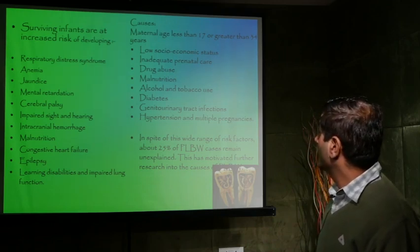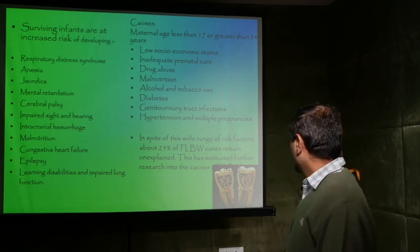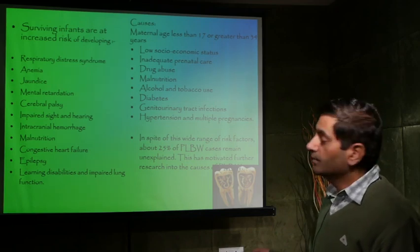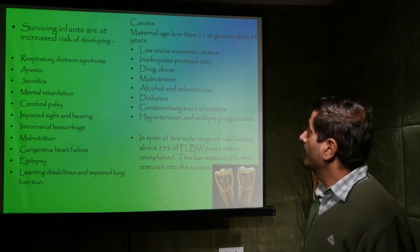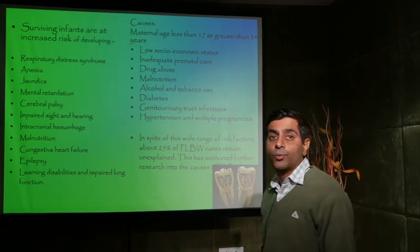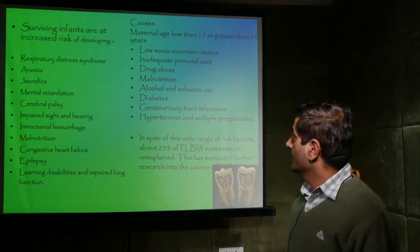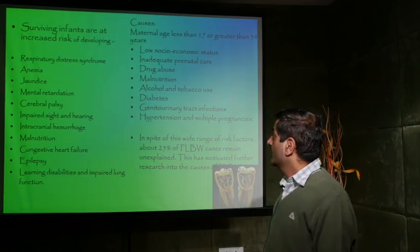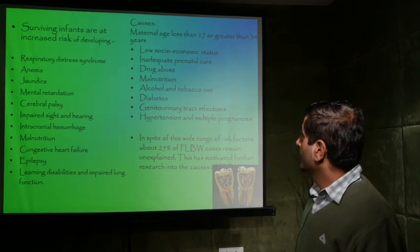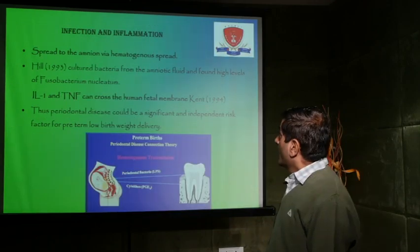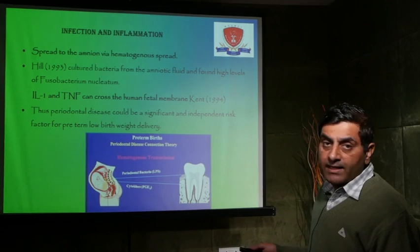Despite this wide range of risk factors, about 25% of preterm low birth weight cases remain unexplained, which has motivated further research into this relationship. Surviving infants are at increased risk of developing respiratory distress syndrome, anemia, jaundice, mental retardation, cerebral palsy, impaired sight and hearing, intracranial hemorrhage, malnutrition, congestive heart failure, epilepsy, learning disabilities, and impaired lung function. Hematogenous spread to the amnion is one established hypothesis.